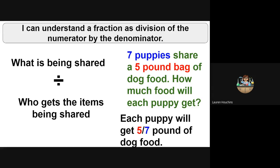Because our numerator is what's being shared, that's our five-pound bag of dog food. Our denominator is who gets those items, and it's seven puppies. So each puppy gets five-sevenths pound of dog food.